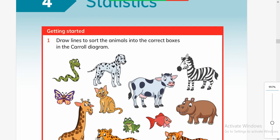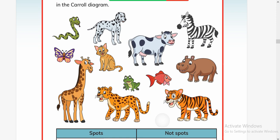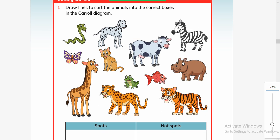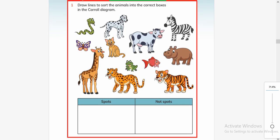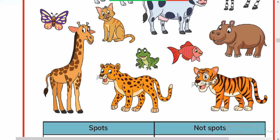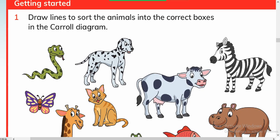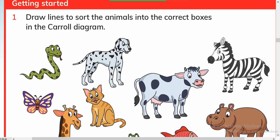Statistics - in statistics we sort out things, we put them in different categories, we synchronize them or we categorize them. Let's see what is written here. The question is: draw lines to sort the animals into the correct boxes in the Carroll diagram.